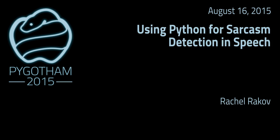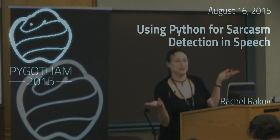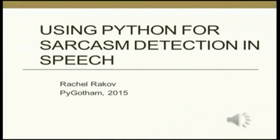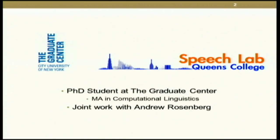My name is Rachel. The title of my talk today is called Using Python for Sarcasm Detection in Speech. A little bit of background about me: I'm a PhD student at the Graduate Center at the City University of New York. I've got a Master's in Computational Linguistics and working on my PhD now. The work I'm going to be talking about today is joint work with Andrew Rosenberg, who's my advisor.